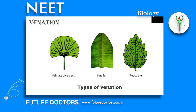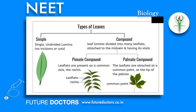Venation: The arrangement of veins and veinlets in the lamina of a leaf is called venation. When the veinlets form a network, the venation is termed reticulate venation. When the veins run parallel to each other within a lamina, the venation is termed parallel. Leaves of dicotyledon plants generally possess reticulate venation, while parallel venation is the characteristic of most monocotyledons.